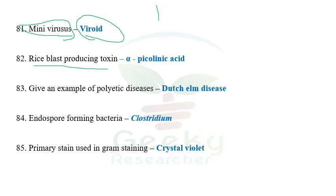The next question: rice blast-producing toxin — pyricularin is a well-known toxin produced by the rice blast pathogen. However, pyricularin will not be in the options. The rice blast pathogen Pyricularia oryzae produces two toxins: pyricularin and alpha-picolinic acid. So the alternate option is alpha-picolinic acid. Other options given were physaric acid and alternaric acid. The appropriate option is alpha-picolinic acid — remember that rice blast pathogen produces two toxins: pyricularin and alpha-picolinic acid.